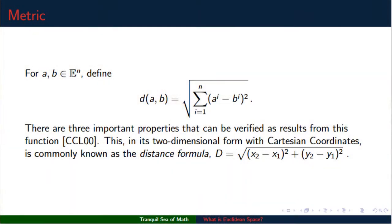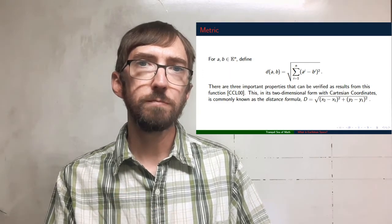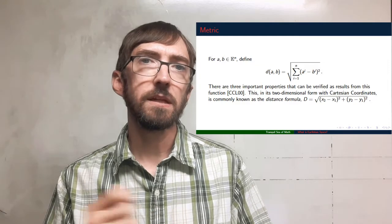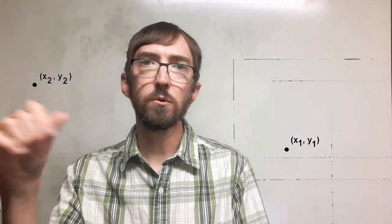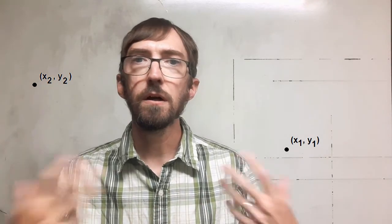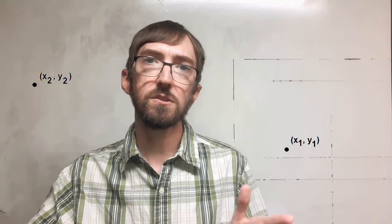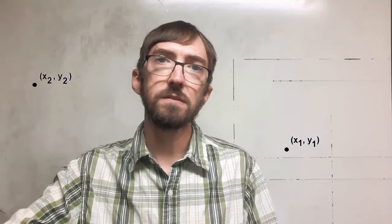Next we establish a metric — a way to measure within the geometric space. This formula works for dimensions one and higher, so we have a very general form. What is traditionally seen in high school is a two-dimensional form with Cartesian coordinates: a point with an xy coordinate, a second point with an xy coordinate, plugged into the distance formula to get a distance. This is a positive value because we are measuring distance traveled from one point to another.